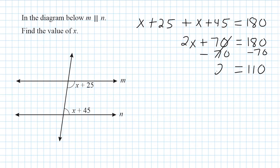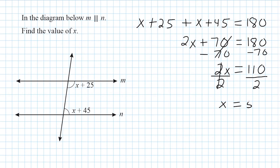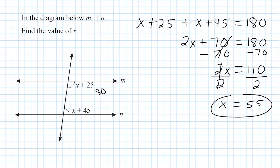On the left we have 2x. We do the inverse of multiplying by 2, which is dividing by 2 on both sides. The 2s cancel out, leaving 1x on the left, and 110 divided by 2 is 55. If we check our answer by plugging 55 in for x: 55 plus 25 is 80, and 55 plus 45 is 100, and 80 plus 100 gives us 180 degrees — which is always the angle sum of same side interior angles.